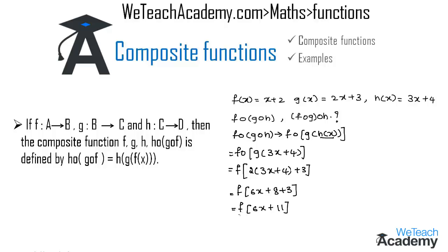Now we find the value of f of 6x plus 11 by replacing x with 6x plus 11, and we get 6x plus 11 plus 2, which is equal to 6x plus 13.